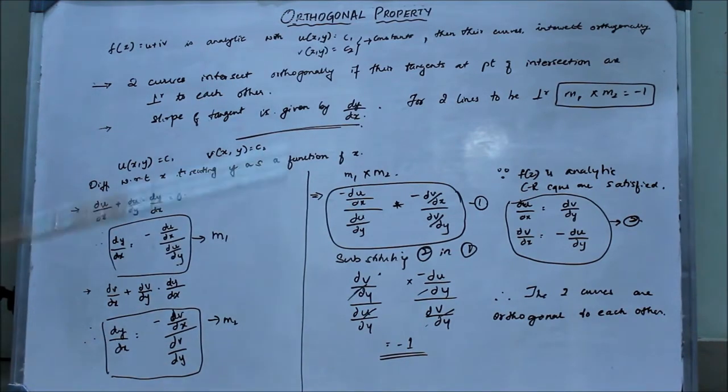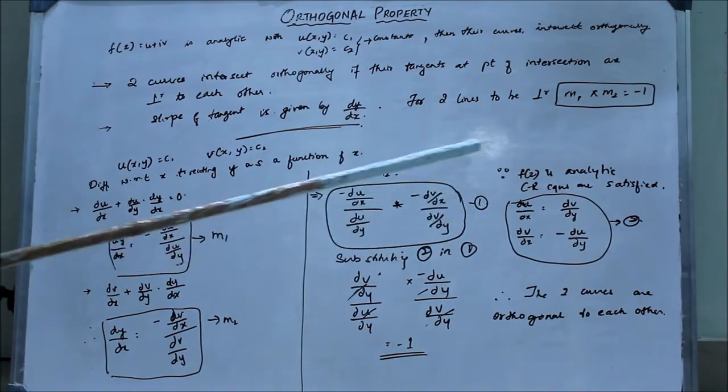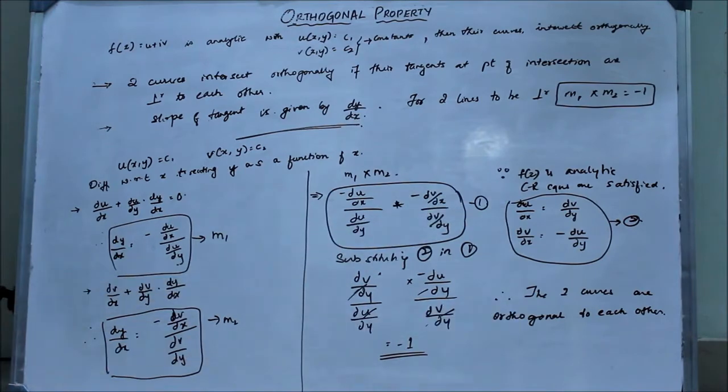Now we need to prove that the product of these two slopes is equal to negative 1. So we multiply m1 and m2. When you multiply this, we end up with this expression. But since fz is an analytic function, the Cauchy-Riemann equations are satisfied.